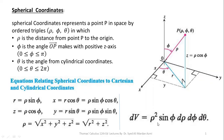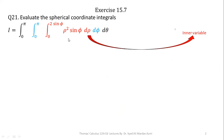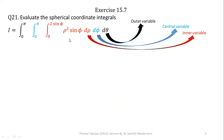Please note that in the process of integration of triple integrals, this order remains as it is. Now we will learn question number 21 from exercise 15.7, Thomas Calculus 12th edition. We have to evaluate this spherical coordinate integral. In this integral, our most inner variable is rho, our middle variable is phi, and our most outer variable is theta. Please note that in the spherical coordinate system, this ordering is fixed, just like in cylindrical coordinate systems.